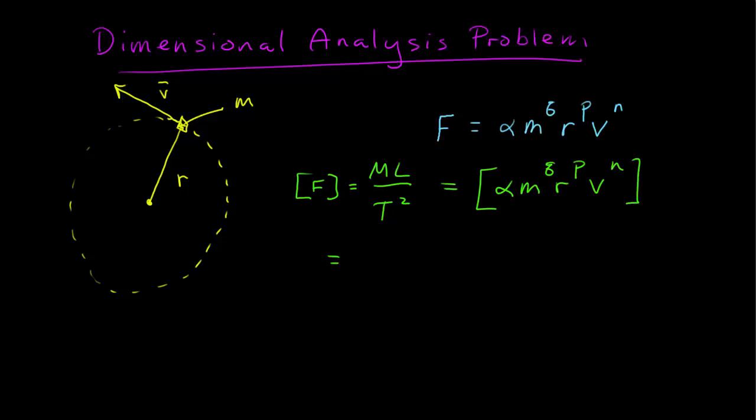And since dimensions multiply like scalars, that's the dimension of each one separately. Dimension of r to the p, dimension of speed to the n.